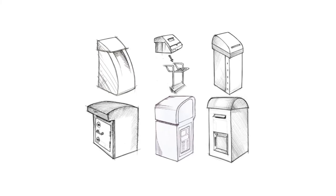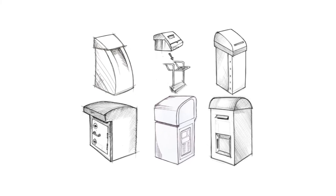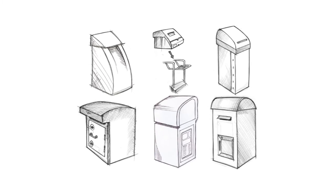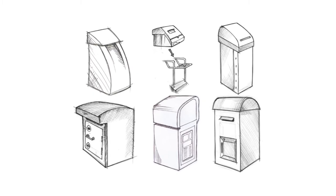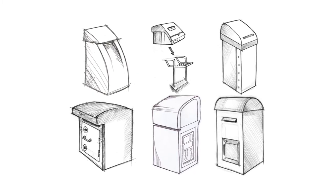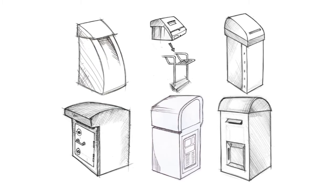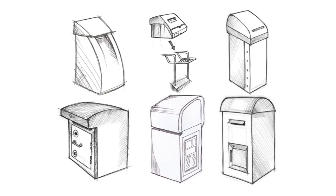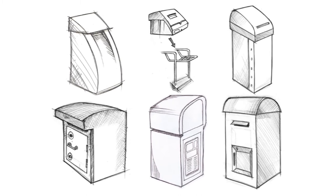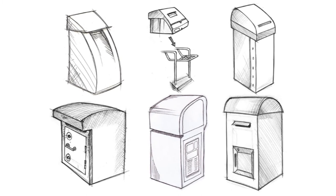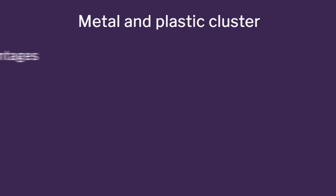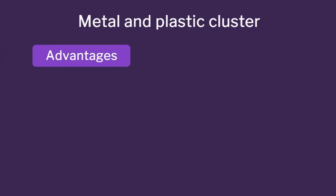The next cluster is the combination cluster — a combination of plastic and metal. Here the top is made out of plastic and the bottom is made out of metal, so you have advantages of both. You have a good smooth surface on top for water to run off, and a flat body which can store large letters — best of both worlds. This cluster used the advantages of both: metal for the strong body and plastic for the top.